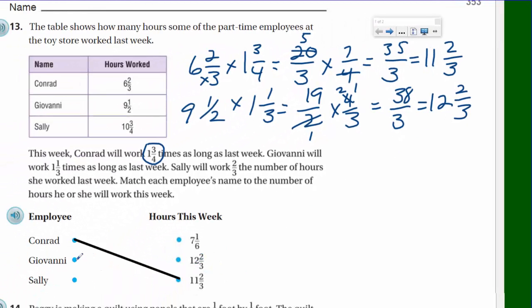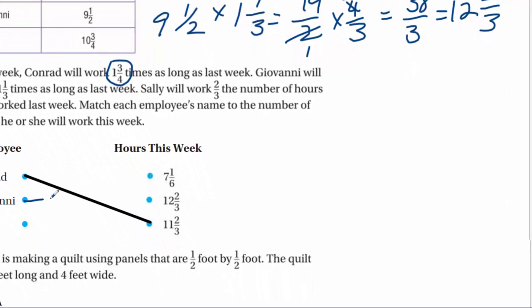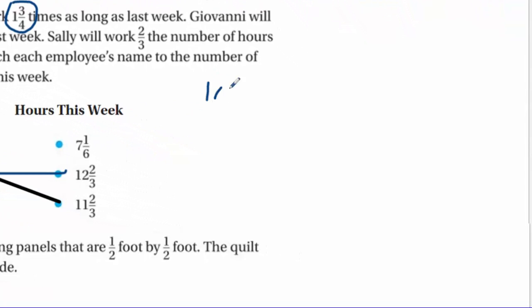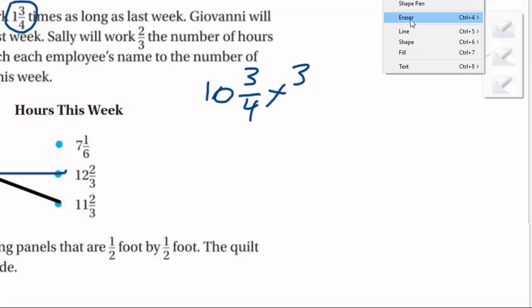So this one here, Giovanni, is going to go straight across. Now we could just do this last one, but you know, there's nothing like making sure that you have the correct answer. Let's just go ahead and do 10 and 3/4 times 2/3.